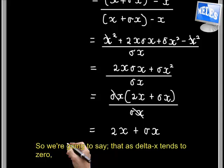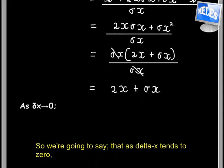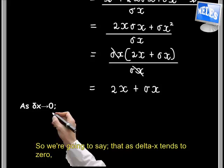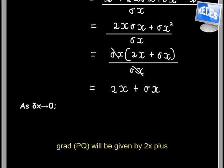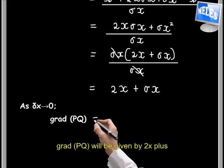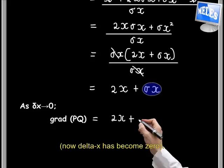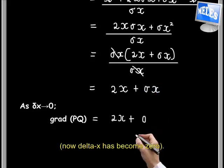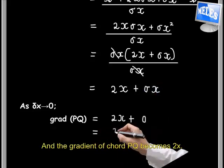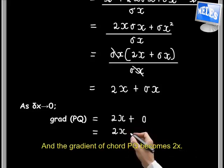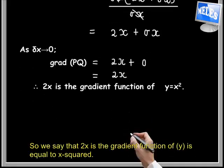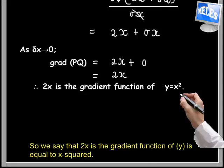So we're going to say that as delta x tends to zero, gradient PQ will be given by 2x plus delta x becomes zero, and the gradient of chord PQ becomes 2x. So we say that 2x is the gradient function of y equals x squared.